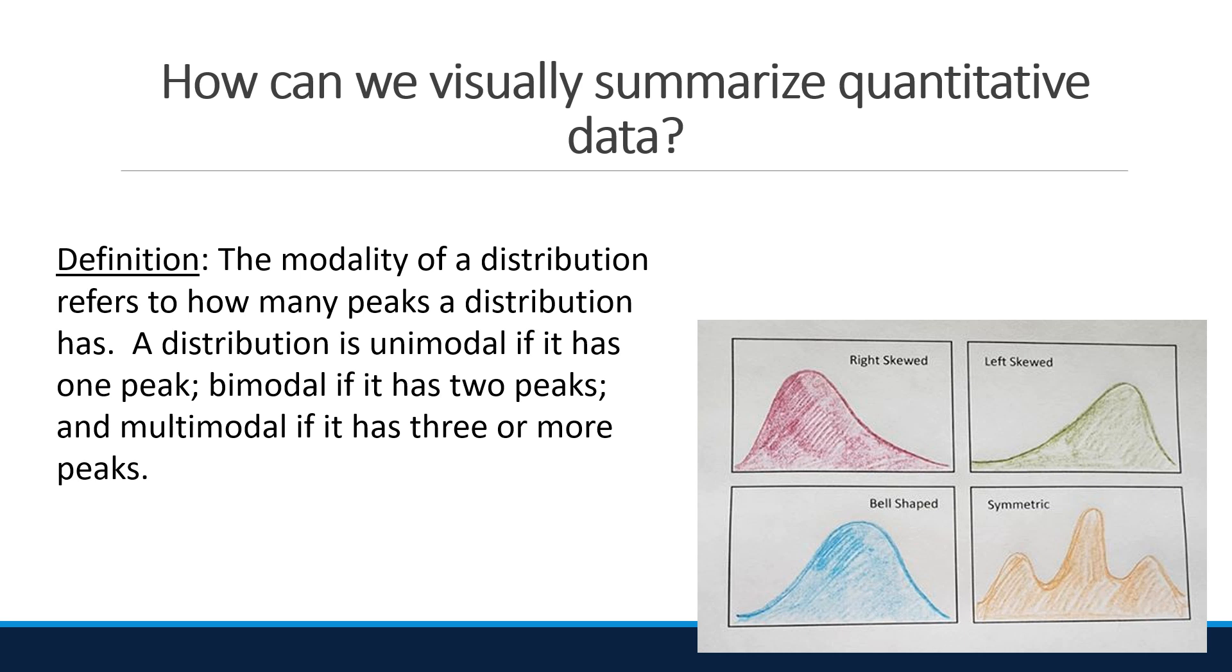The modality of a distribution refers to how many peaks a distribution has. A distribution is unimodal if it has one peak, bimodal if it has two peaks, and multimodal if it has three or more peaks.